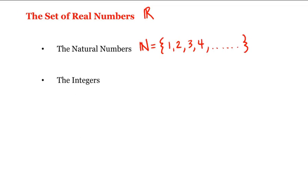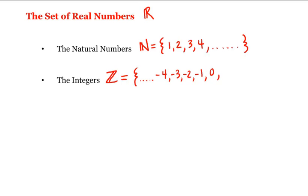The second subset to consider is what we call the integers. The integers are all the natural numbers together with their negatives and 0. We represent the set of integers by a capital Z. So Z includes all the negative natural numbers, together with 0, and then all the natural numbers.